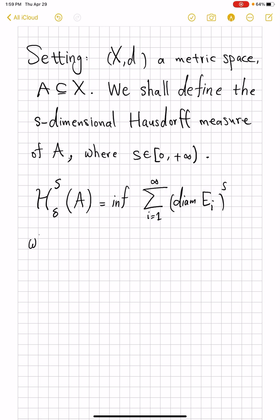where infimum is over all countable coverings. So, these E_i's are some other subsets of your metric space, again arbitrary. Some of them could be empty, so it allows finite coverings, with the condition that diameter of E_i be less than or equal to delta. We also have to say that delta can also be infinity, in which case you have no restriction on the diameters. So, that is where this delta appears.